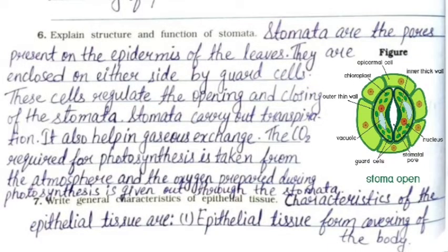Question 6: Explain the structure and functions of stomata. Stomata are pores present on the epidermis of leaves. They are enclosed on either side by guard cells, which regulate the opening and closing of stomata. Stomata carry out transpiration and help in gaseous exchange. Carbon dioxide required for photosynthesis is taken from the atmosphere, and oxygen produced during photosynthesis is released through the stomata.